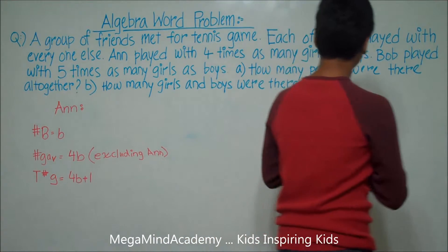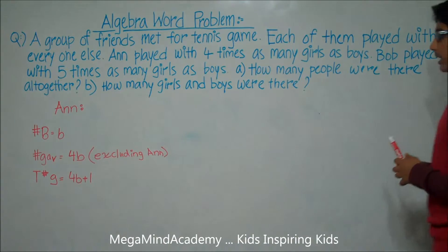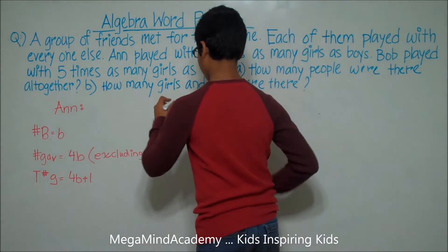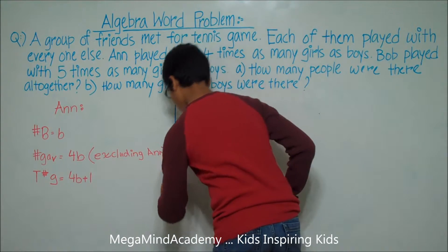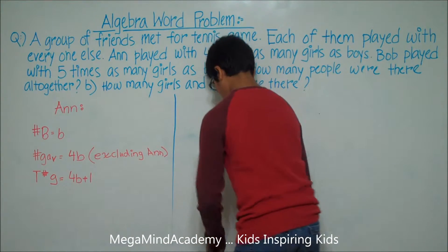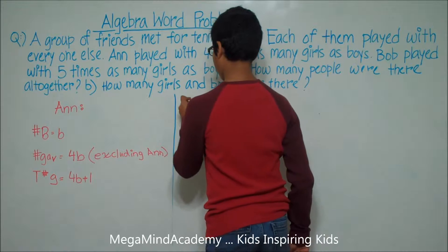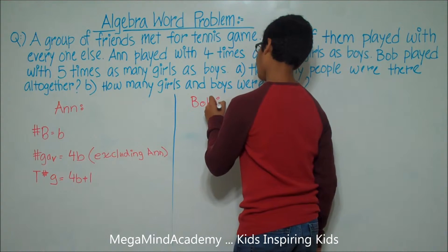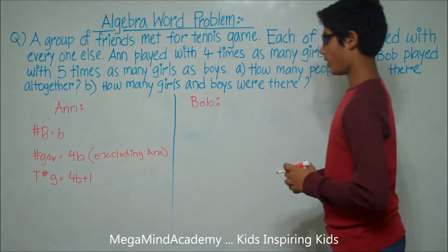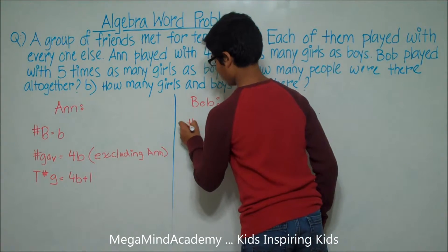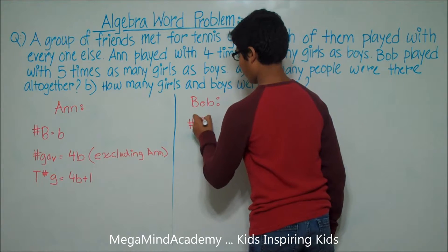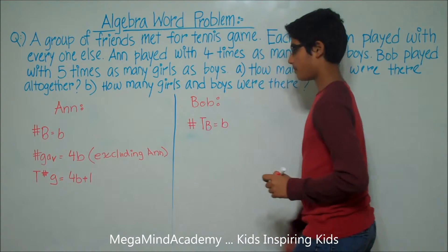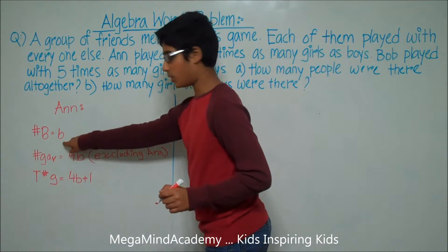The problem also states that Bob played with five times as many girls as boys. So Bob played with five times as many girls as boys. The number of boys is equal to B.